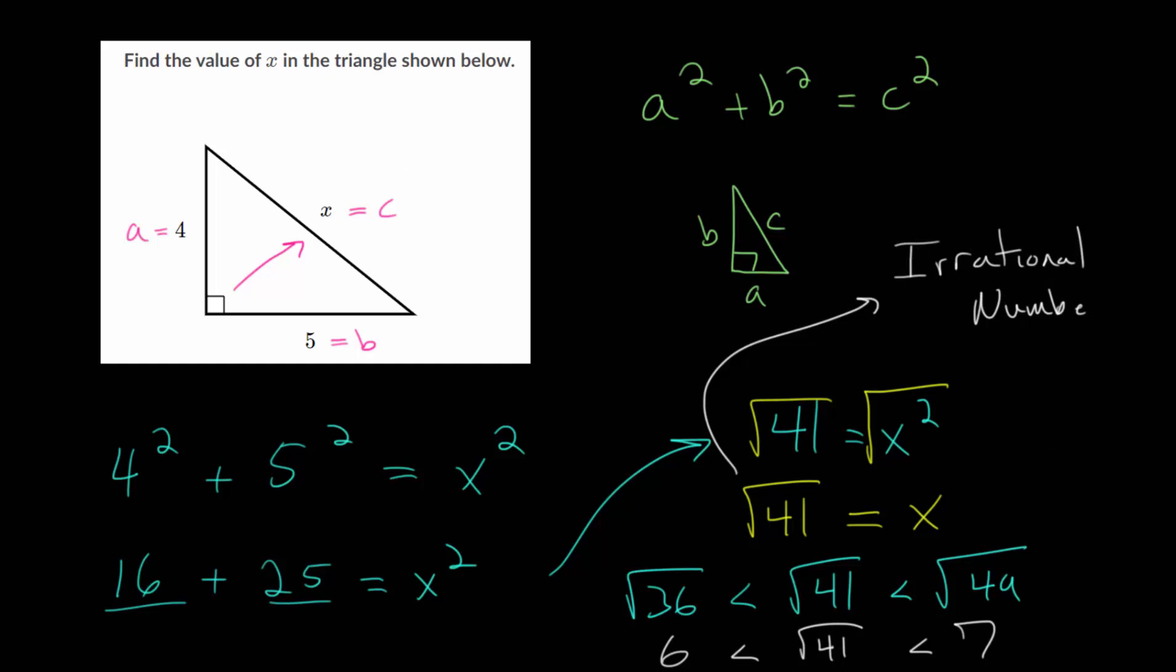So we can't write this as a fraction, and in fact, these numbers have infinitely long decimal expansions. So if you put this into your calculator, you get 6.403, then it goes 1, 2, 4, and it's going to go on forever. It has an infinitely long expansion that does not have a pattern.